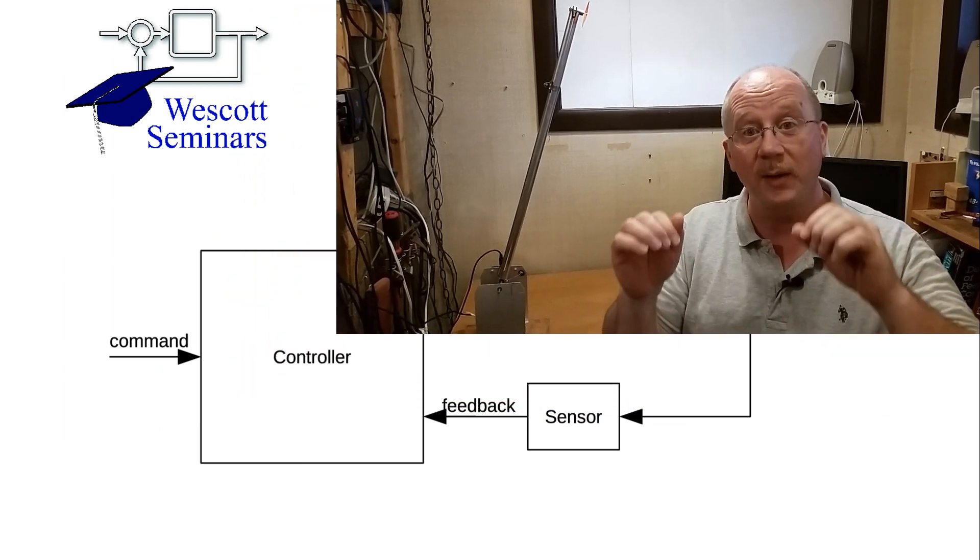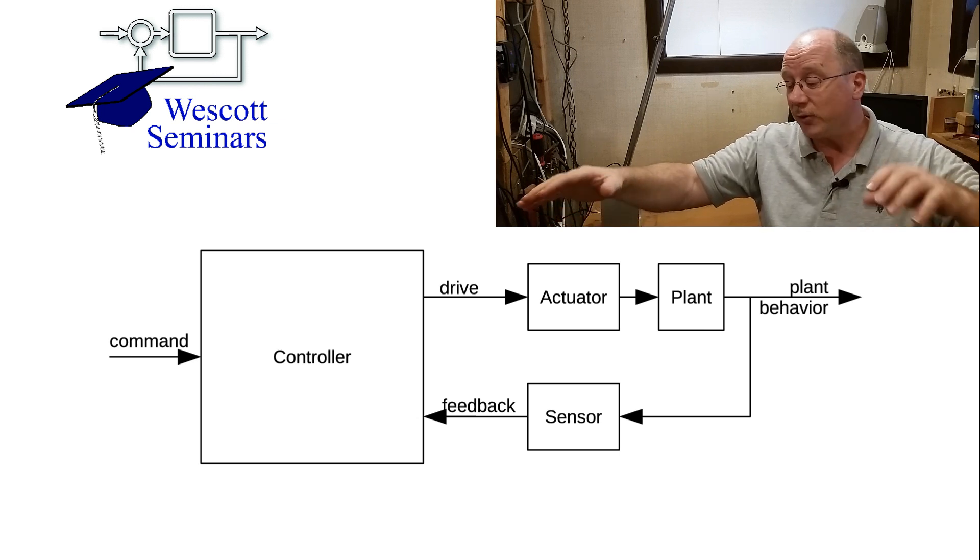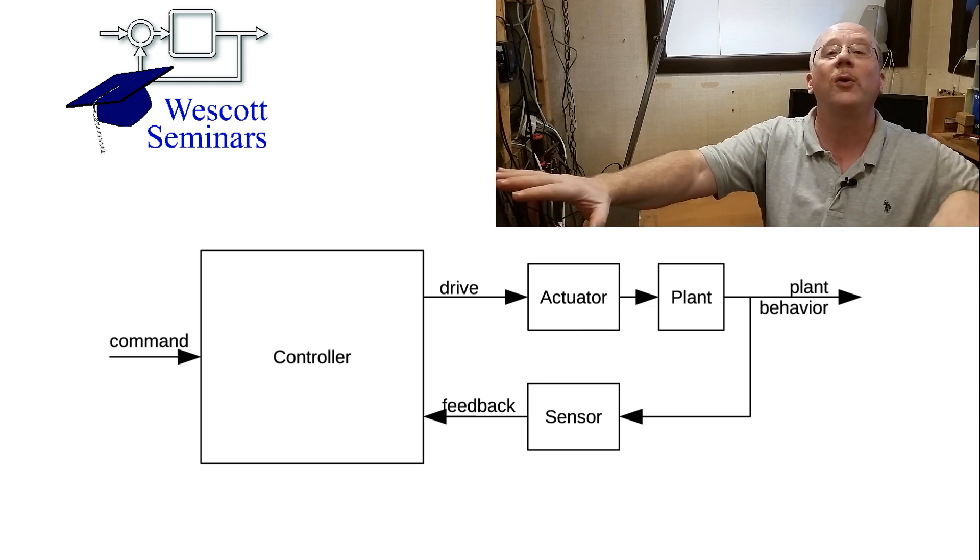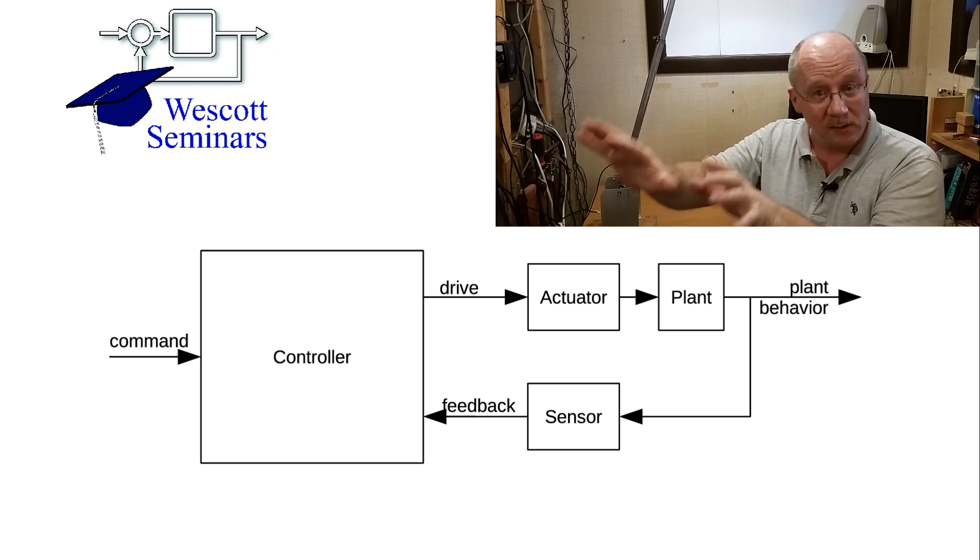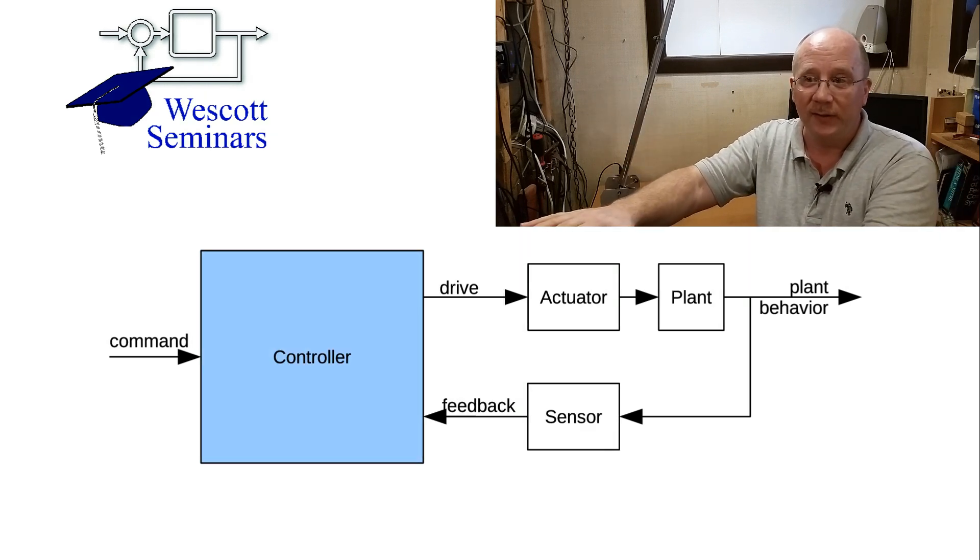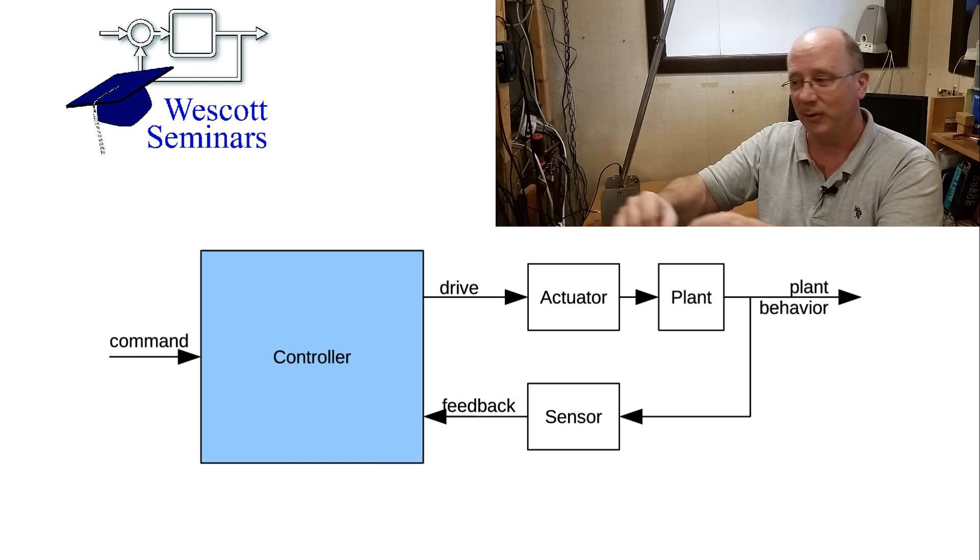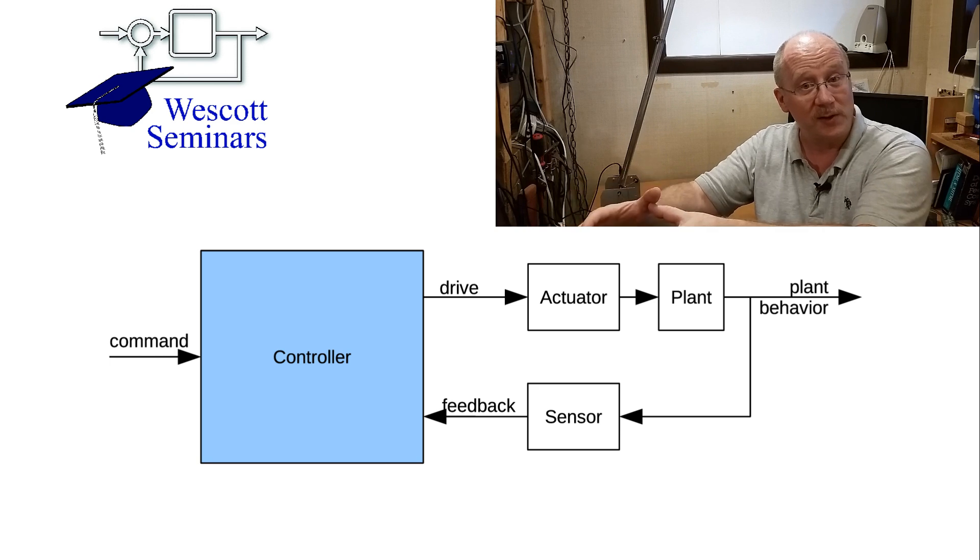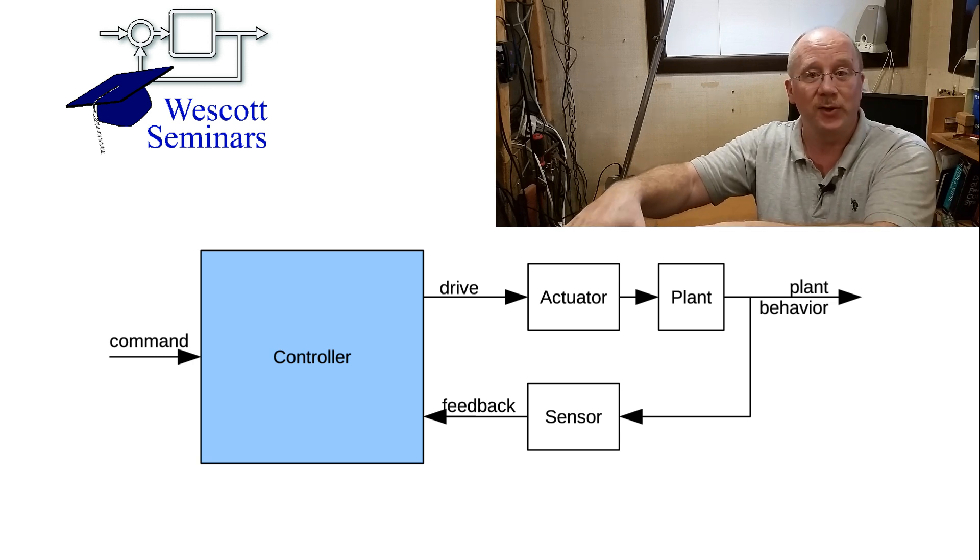Before we dive into the software itself, I want to show you a block diagram of the control system that we'll be implementing. Now, this block diagram is actually a diagram of the entire system. So before we focus down on the software, I want to look at the whole thing. So this system has a controller, and depending on how you want to view things, that's either the processor, or it's a board with a processor on it, or you might want to think of it as just the software. But that controller is the part of the system that's actually making decisions about control.